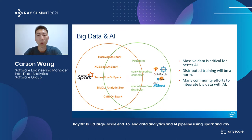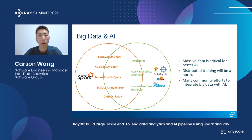With more and more data being used for training, it's becoming clear that a single node will not meet the computing requirements of training, so distributed training will be a norm. We have seen many projects that try to integrate these communities, like Horovod on Spark and TensorFlow on Spark. These projects run deep learning frameworks on Spark. There are also other projects like Petastorm that store the Spark output into file formats that can be read by deep learning frameworks.